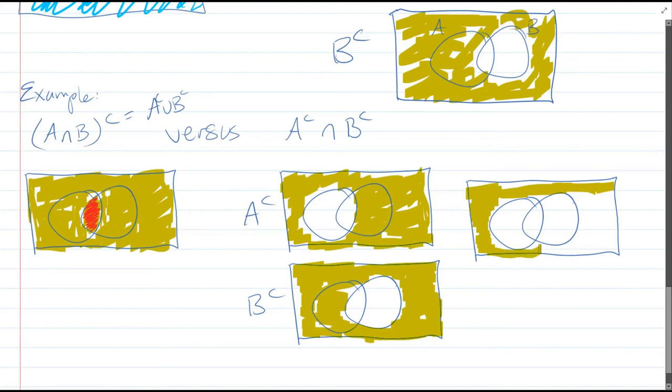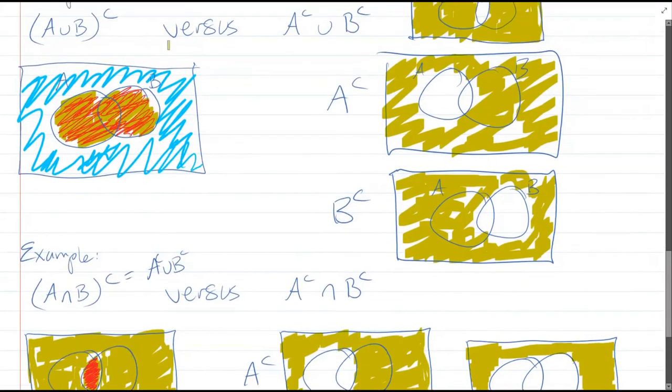It's a lot of area to color, but it's not, it's only one region. It's a big region. So there we go. That is A intersect B complement. Not a coincidence that it's the same as you saw up here.